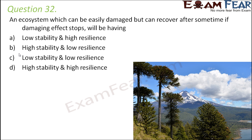Question number 32: an ecosystem which can be easily damaged but can recover after some time if the damaging effect stops — will it have low stability and high resilience, high stability and low resilience, low stability and low resilience, or high stability and high resilience? An ecosystem that can be easily damaged means it lacks the power to remain stable against adverse conditions, so it has low stability.